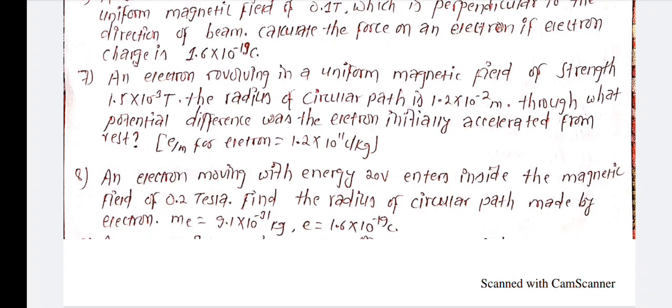An electron moving with energy 20 electron volts enters a magnetic field of 0.2 Tesla. Find the radius of the circular path made by the electron.